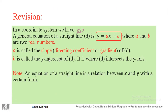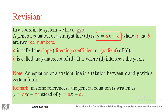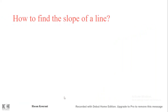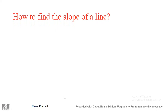An equation of a straight line is a relation between x and y in a specific form. In some references and books, the general equation is written as y = mx + c, using different letters for slope and y-intercept instead of ax + b — both forms are equivalent.